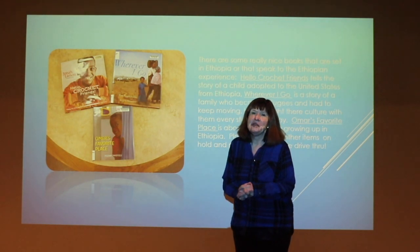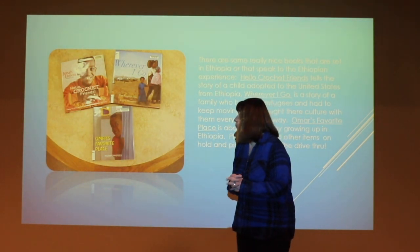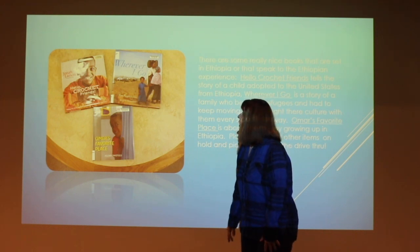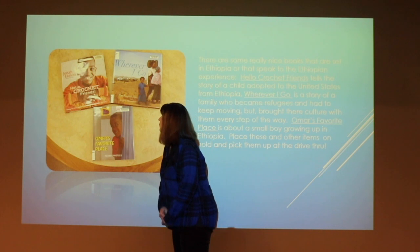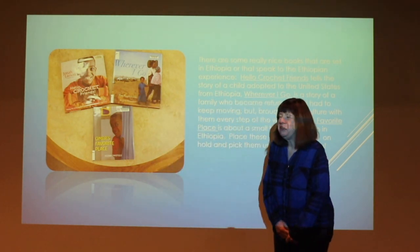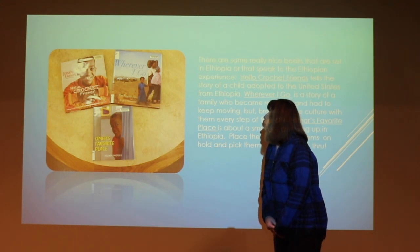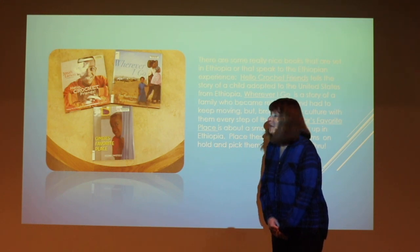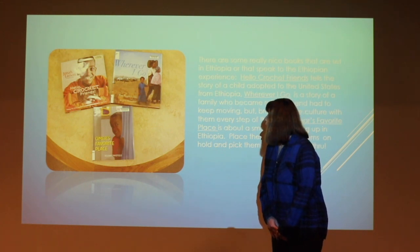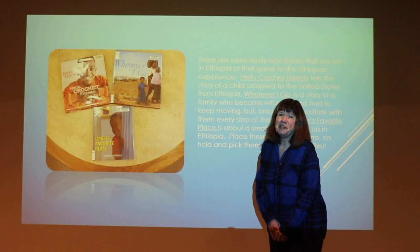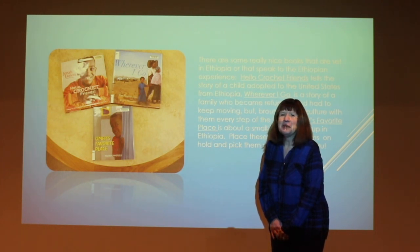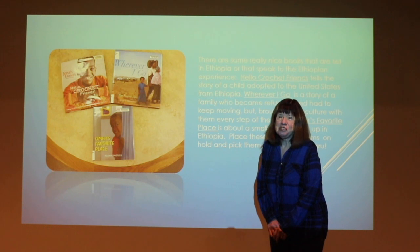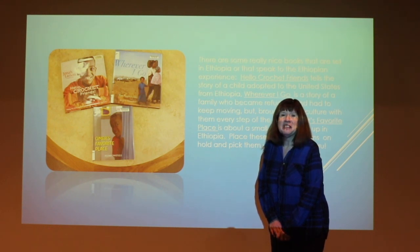Hi kids, good to see you this month. I found three books that I thought were representative of the population of Ethiopia. Jonah Larson's Hello Crochet Friends is about a boy who was adopted into the United States from Ethiopia. Where I Go is about refugee families — there are a lot of refugees in that region, and it talks about their travels and how much they keep their culture together. And Omar's Favorite Place is a very sweet story about a little boy growing up in Ethiopia, a lot like a story about a little boy growing up in the United States. Please remember you can give us a call or go on our website and reserve things — we'll put them in the drive-through for you, or just come in and browse.